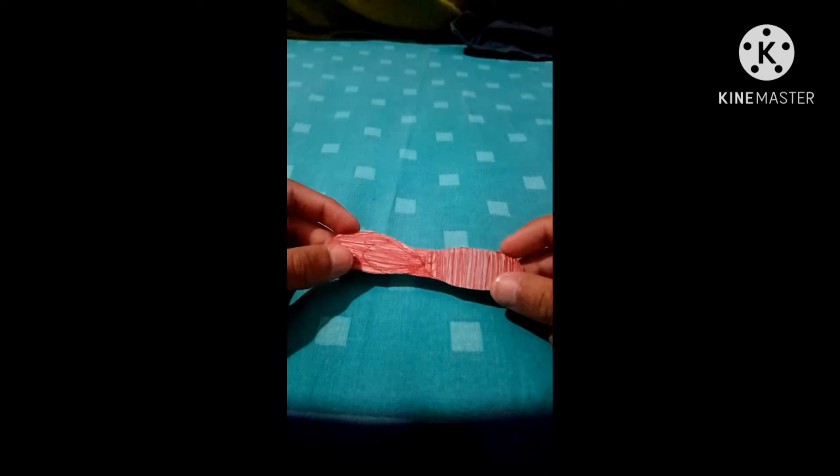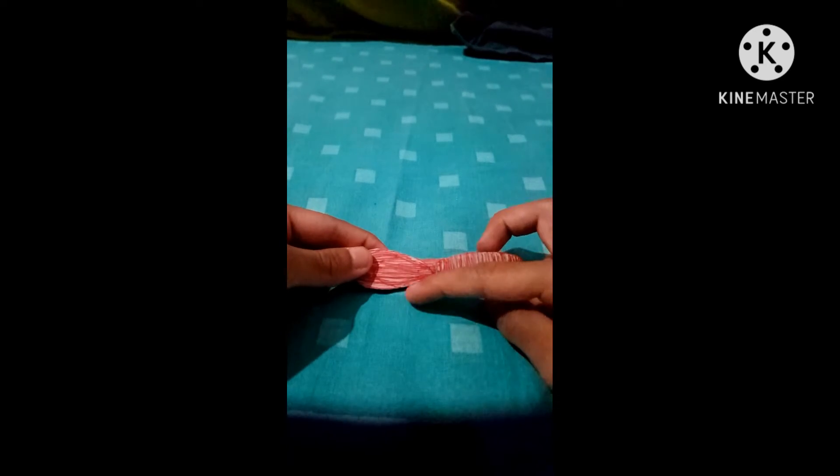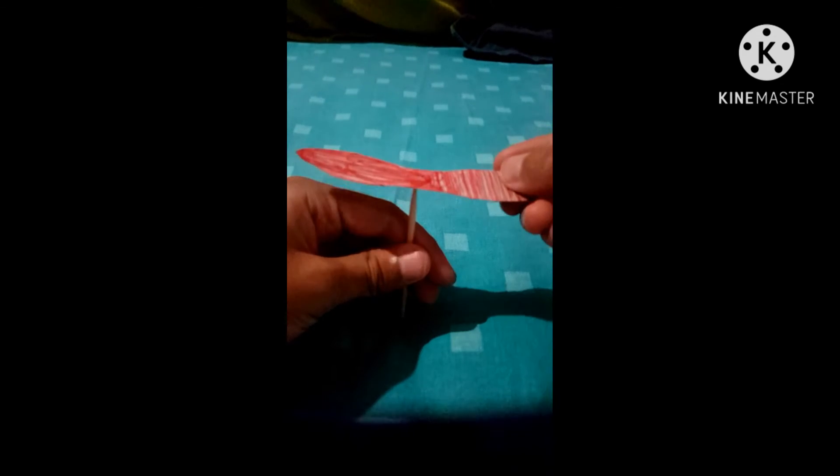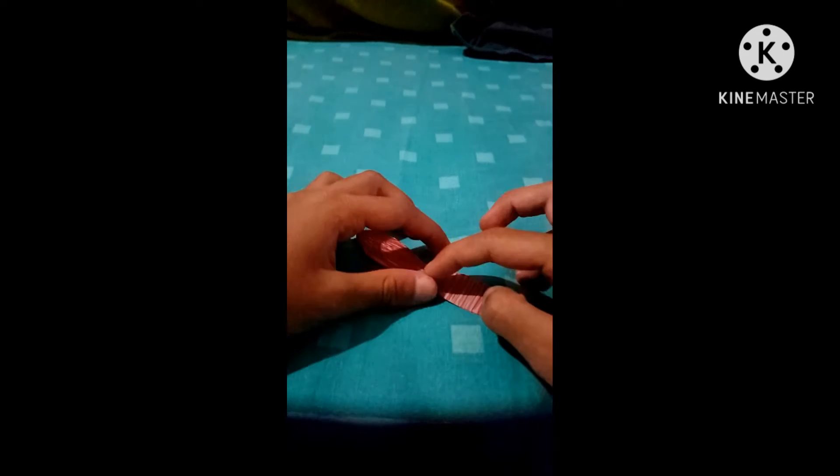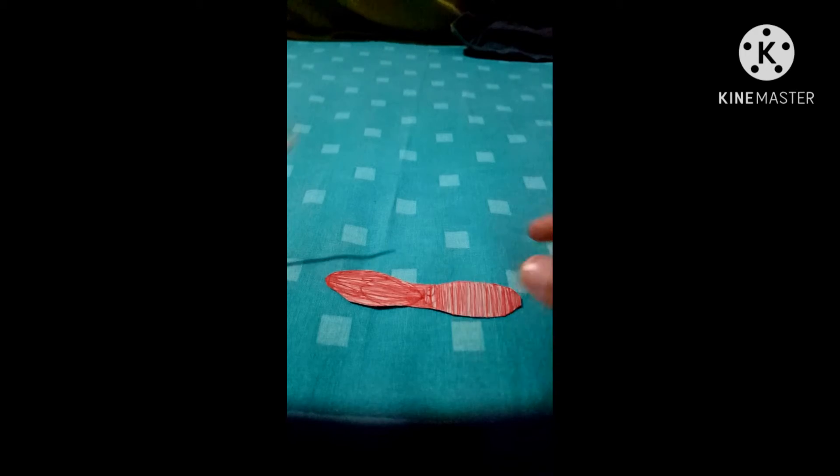So, guys, this is the final shape of my helicopter. And I drew lines over here so the toothpick would fit properly over here, right there. Then you can make the middle more thick, and then it would fit properly. And these two wings won't come apart. And this is the final shape. And let's move on to the next step.